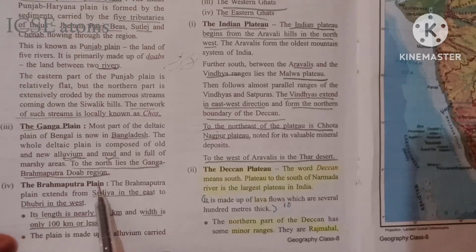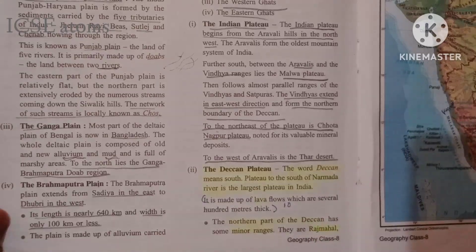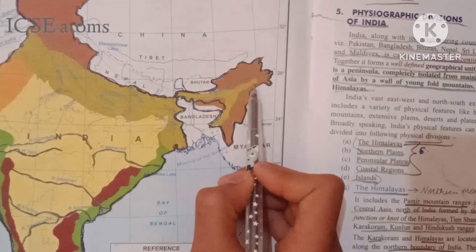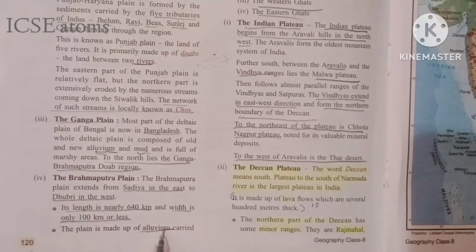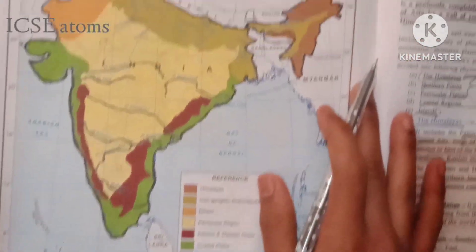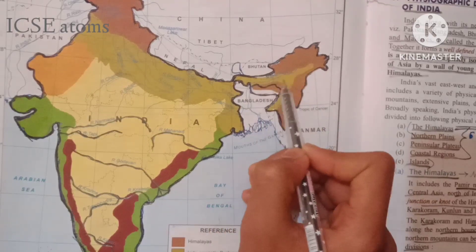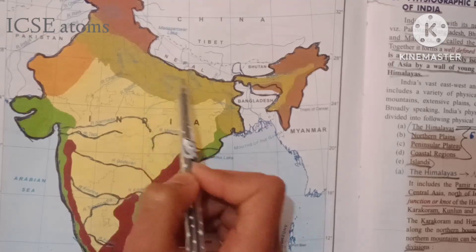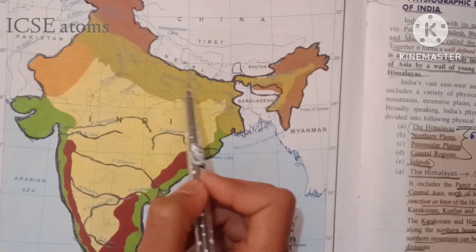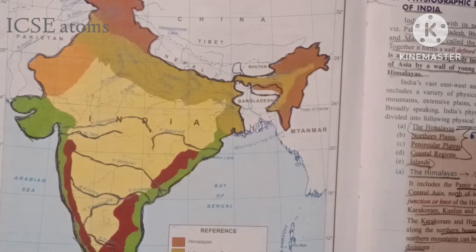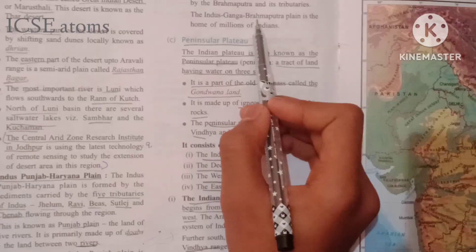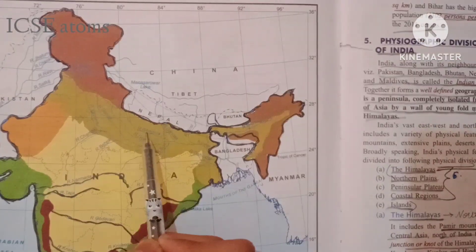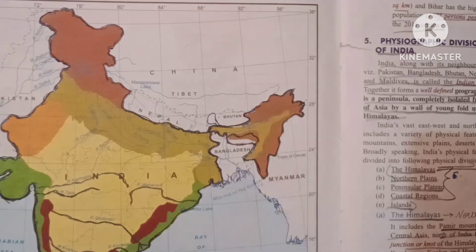The Brahmaputra Plain extends from Sadiya in the east to Dhubri in the west, with a length of 640 kilometers and a width of less than 100 kilometers. Like other river plains, it is made up of alluvium deposited by the Brahmaputra river. The Ganga plain is formed by rivers such as the Ganga, Yamuna, Gomti, and Ghaghra, also made up of alluvial soil. Collectively, the Indus, Ganga, and Brahmaputra plains are home to several million people and are the most agriculturally fertile region.